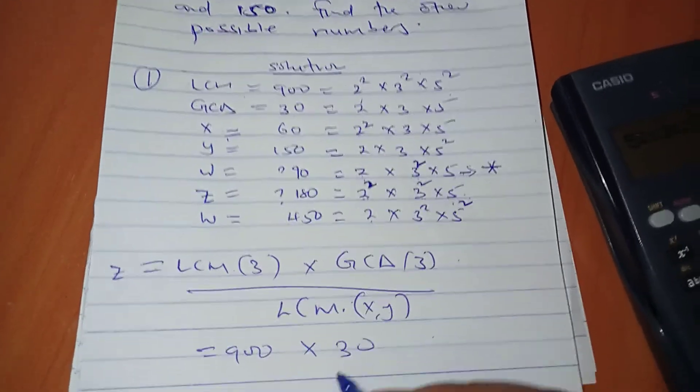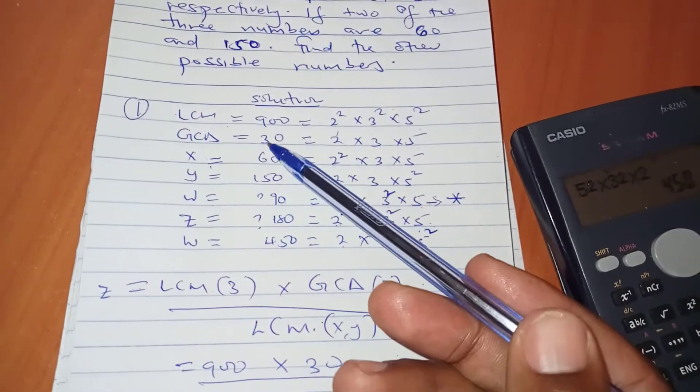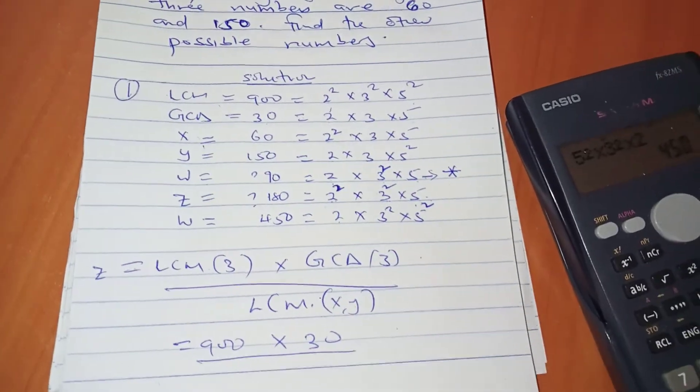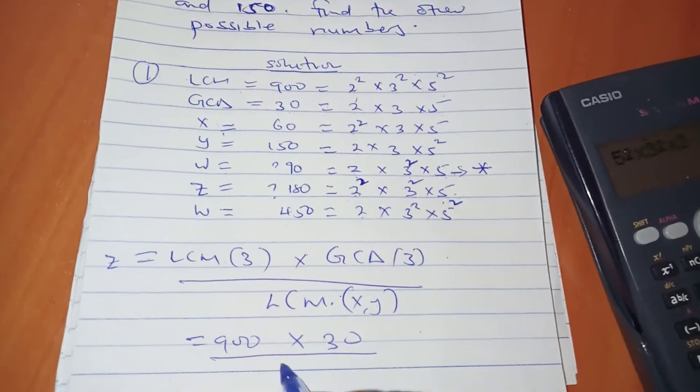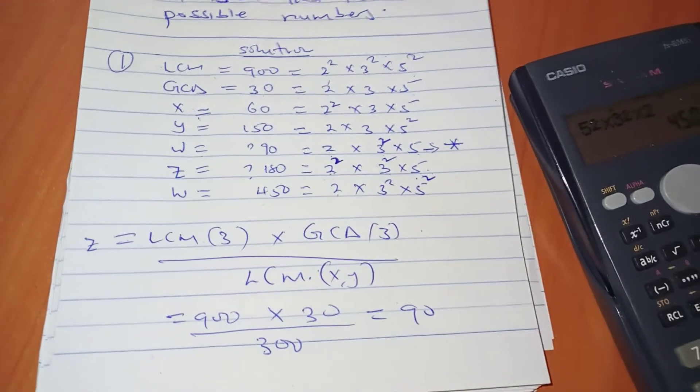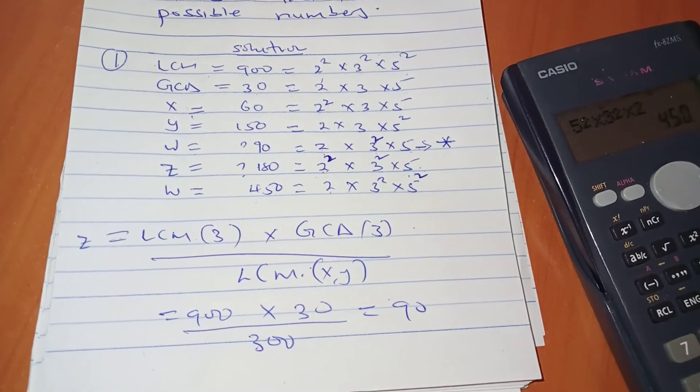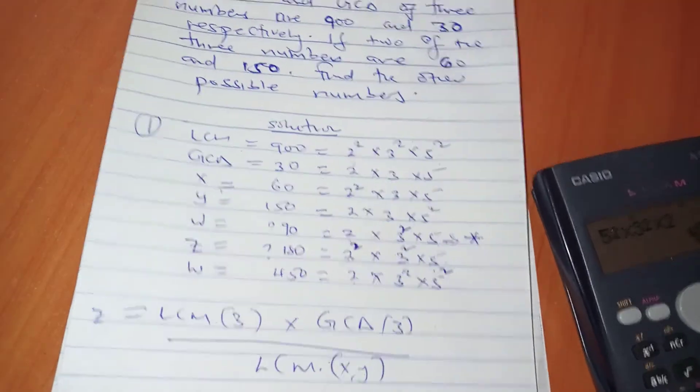In this case, LCM was 900, GCD was 30, and the LCM of 60 and 150 is 300. So if you divide: (900 × 30) / 300 = 90. Very fascinating.